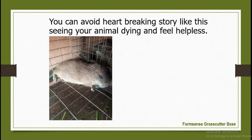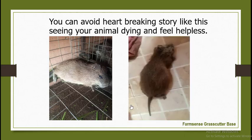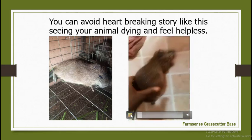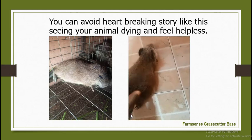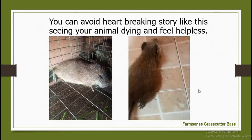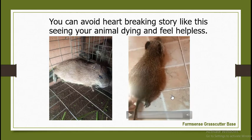You can see on the screen an animal that is very weak from having eaten poisoned food. This was an animal that would normally jump from place to place and run to the farmer to collect food, but now it is very weak and cannot even move. This animal was eventually lost to death. These animals were about five months old — ready to be crossed. You can avoid experiencing something like this.